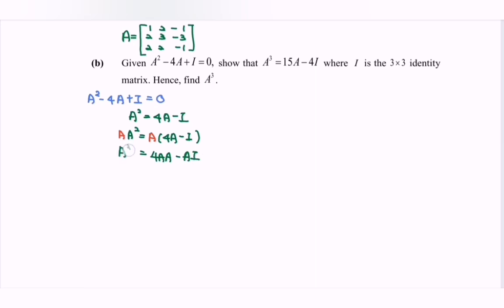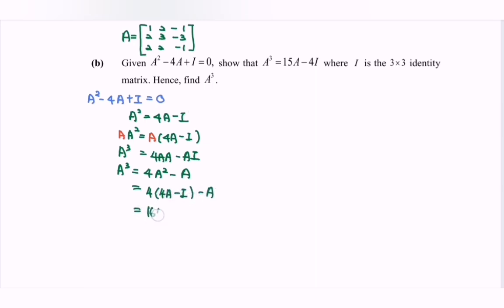So A cubed equals 4A squared minus A. Substitute A squared: 4(4A minus I) minus A, which gives 16A minus 4I minus A. As a conclusion, A cubed equals 15A minus 4I, and we have shown the situation.